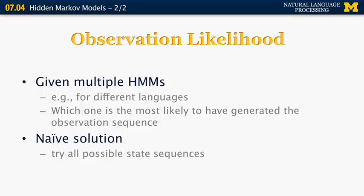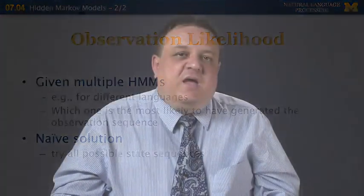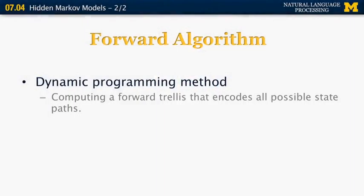One solution is to try all the possible sequences for each of the HMMs, but this is not going to work in practice because it has very high complexity. Instead, we want to do something similar to the Viterbi algorithm in the sense that it uses dynamic programming. It's called the forward algorithm. The forward algorithm uses a trellis called the forward trellis that encodes all the possible state paths.